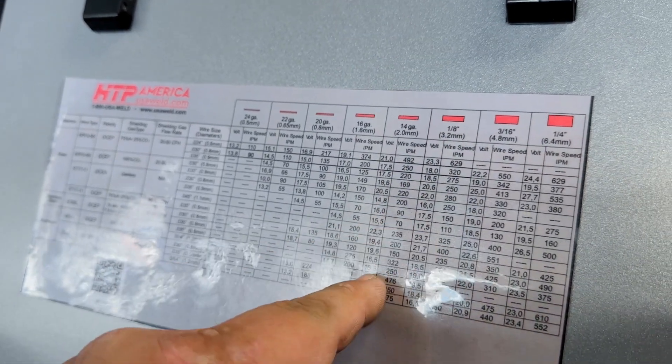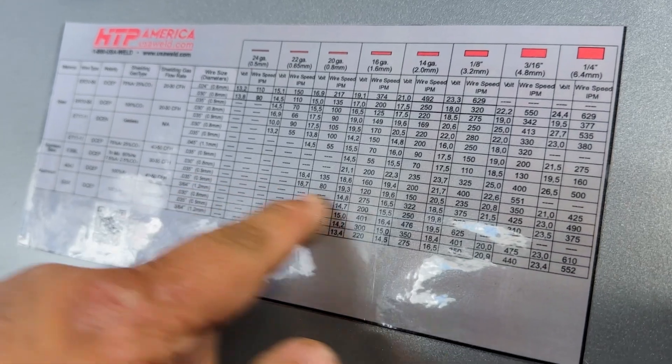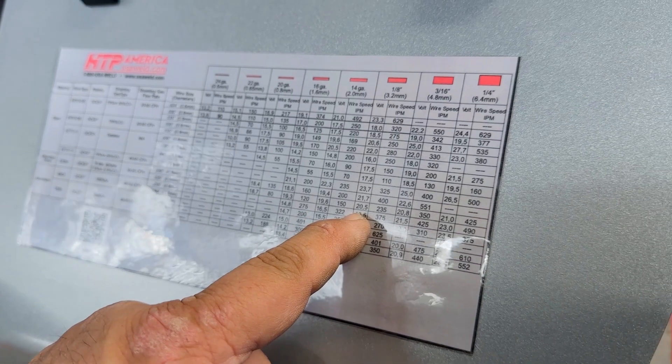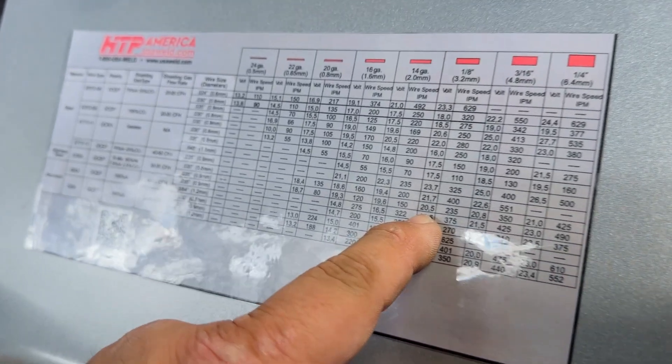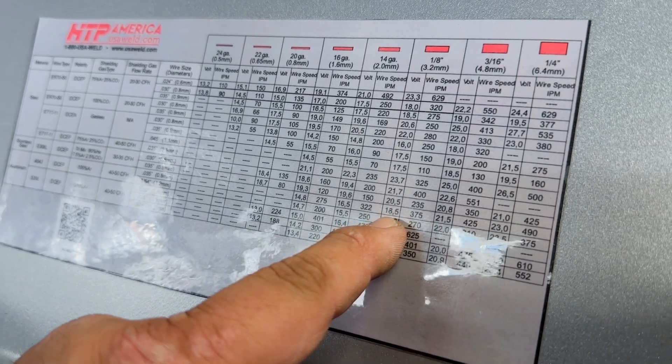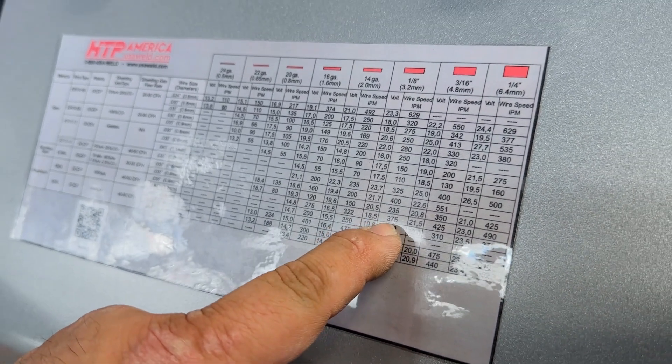So we're going to pick 0.35. We can either pick the one eighth because we have the thick work table as the heat sink under it. Then we just need to move faster than normal. So we would be right here at 18 and a half volts and 375 inches per minute.